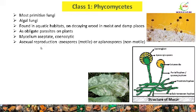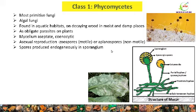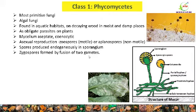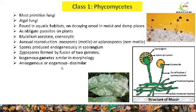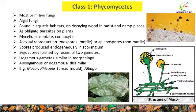In class Phycomycetes, asexual reproduction mainly takes place by formation of motile spores or non-motile spores. The number of spores within a sporangium is always indefinite, and spores are produced endogenously in the sporangium. Zygospores are formed by fusion of two gametes. The gametes may be considered isogamous when similar in morphology, or anisogamous or oogamous when dissimilar in morphology. Common examples are Mucor and Rhizopus, also commonly known as bread mold, as well as Albugo, which is a parasite.